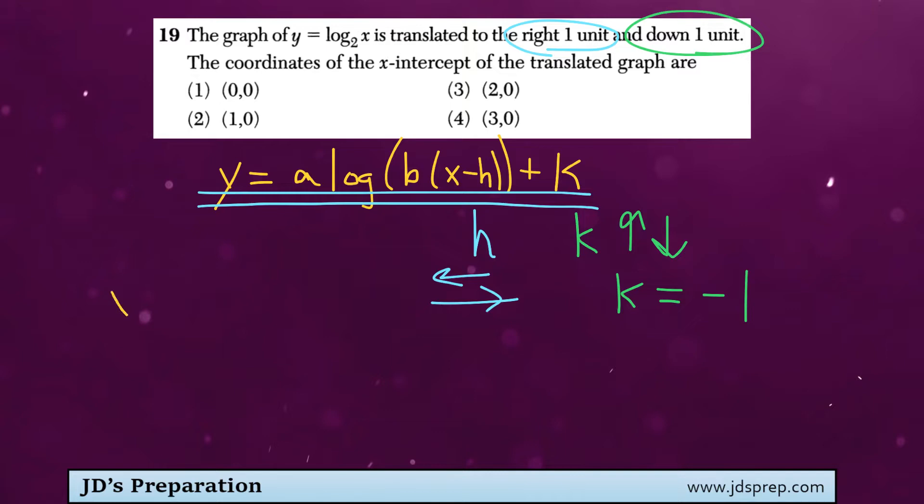So written out, we would have y equals log base 2 of x minus 1 minus 1. So I basically take the general format and I replaced h with 1 and k with negative 1.